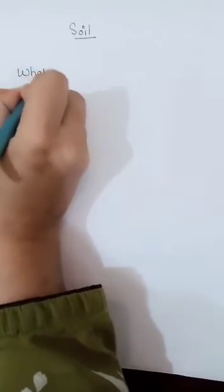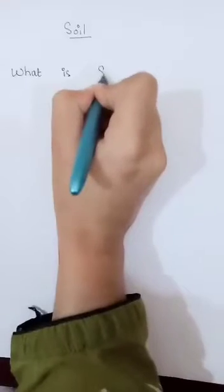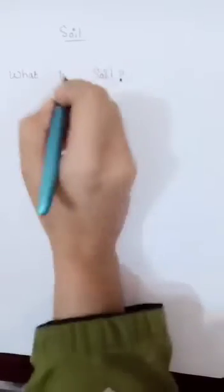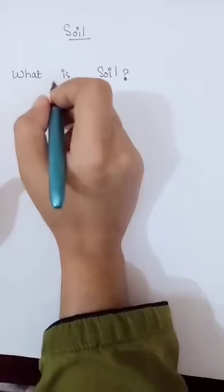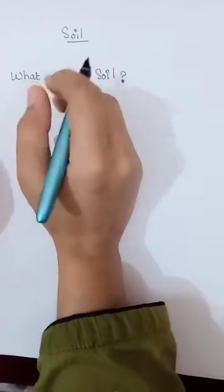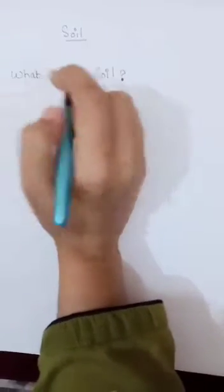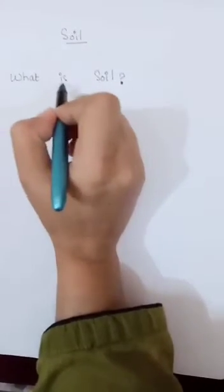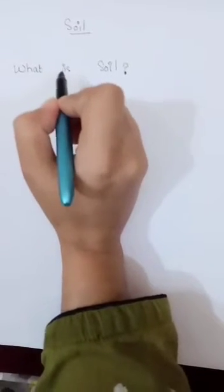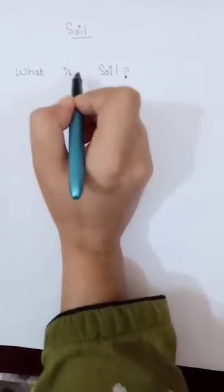What is soil? When rocks are weathered by the sun, rain, wind, and frost, tiny grains of rocks are broken off. These grains make up most of the soil on earth.